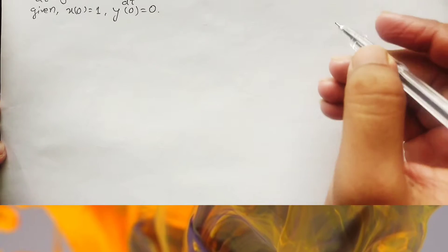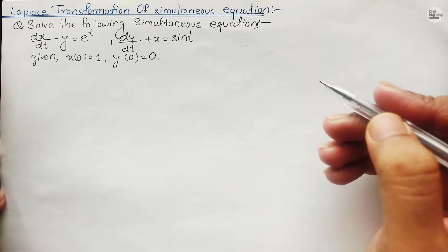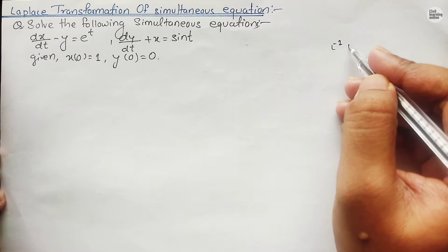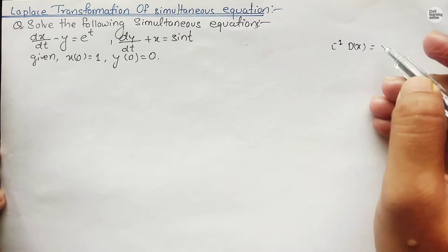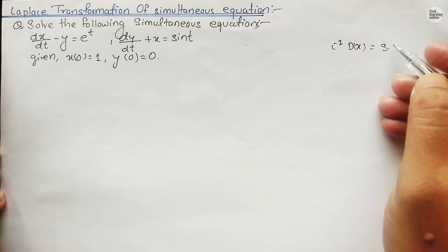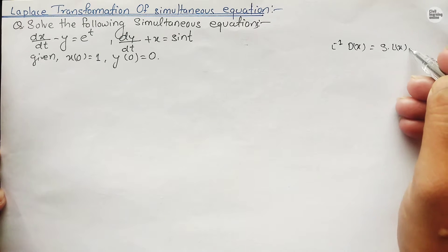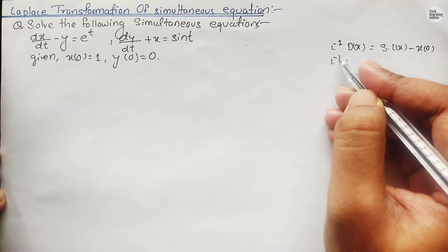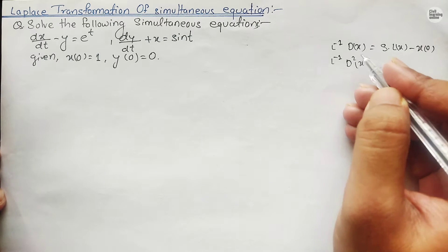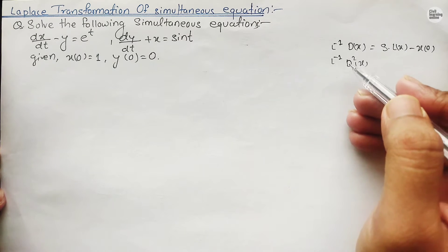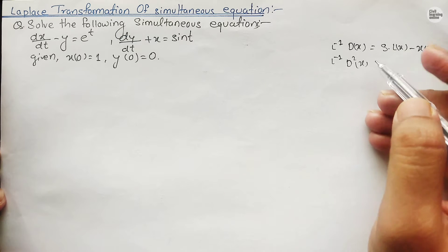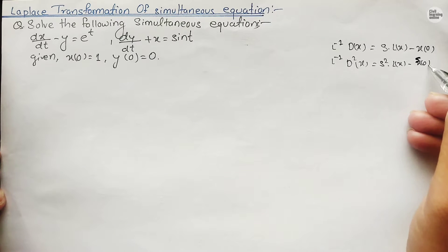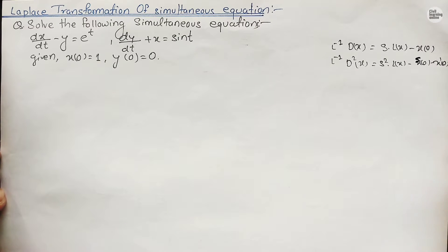I would like to recall some formulas we discussed in the previous lecture. The inverse Laplace transformation of dx/dt equals s times the Laplace transformation of x minus x(0). Similarly, the inverse Laplace transformation of d²x/dt² — where x is differentiated twice — equals s² times the Laplace transformation of x minus x(0) minus x'(0). Similarly we proceed.